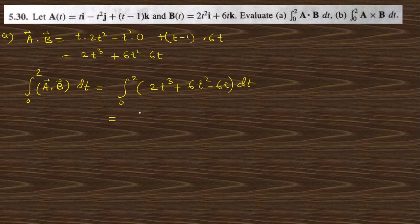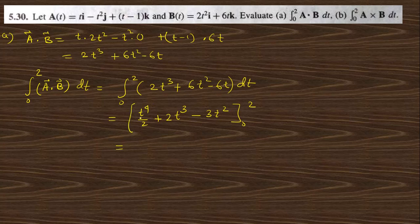Integrating (2t³ + 6t² − 6t) gives t⁴/2 + 2t³ − 3t², evaluated from 0 to 2. Substituting t = 2: 16/2 + 2(8) − 3(4) = 8 + 16 − 12 = 12. Subtracting t = 0 (which gives 0), the answer is 12.